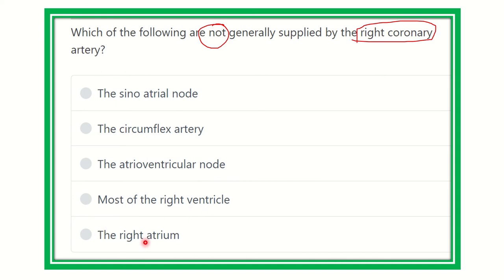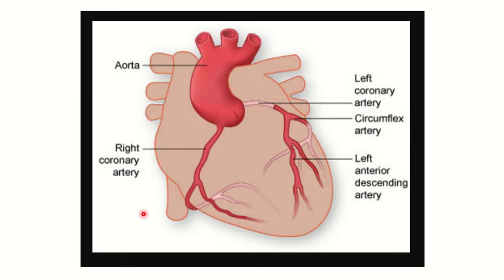We need to identify the right coronary artery and its supplying areas. The right coronary artery arises from the anterior aortic sinus, then passes to the anterior atrioventricular groove. It supplies different parts — especially almost all of the right atrium and almost all of the right ventricle — then turns back to the atrioventricular groove, finally reaching the posterior interventricular groove.